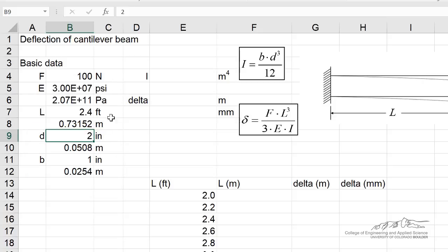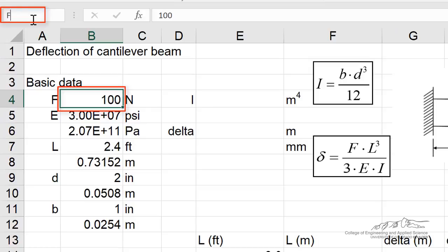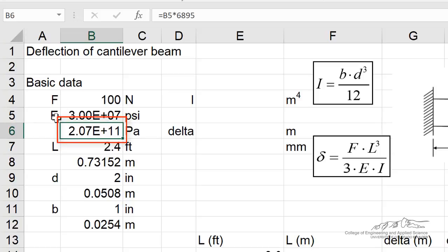So we're going to be working with everything in meters. Now what I'm going to go ahead and do is name some of these things. I'm going to name this cell B4 up here in the name box. That's going to be F. Just to make things easier, I'm going to name the converted modulus of elasticity. So that's capital E in cell B6 because that's in SI units. I'm going to call that big E.